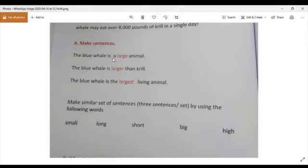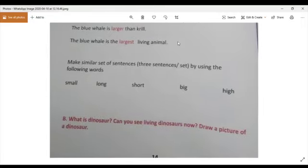There are some examples how you can make sentences. You will write the make sentence in your homework copy. And then exercise B. What is dinosaur? You know, it is an ancient animal. And can you see living dinosaur now? No, we cannot see living dinosaur now in this world.